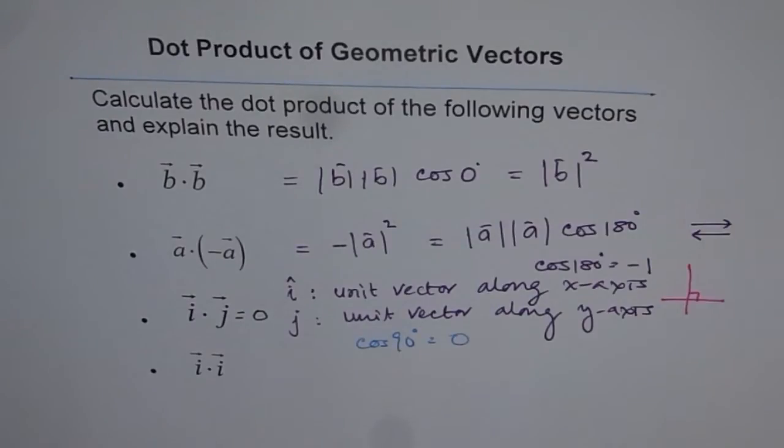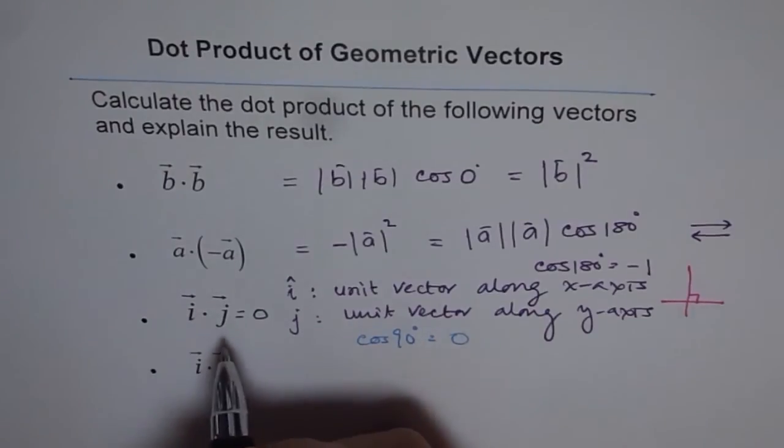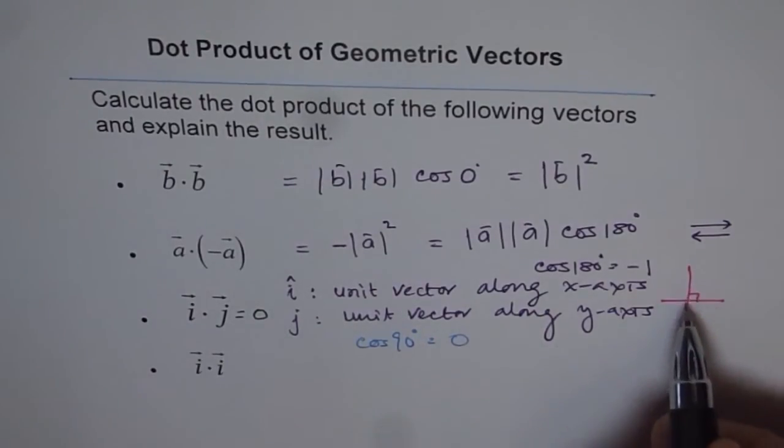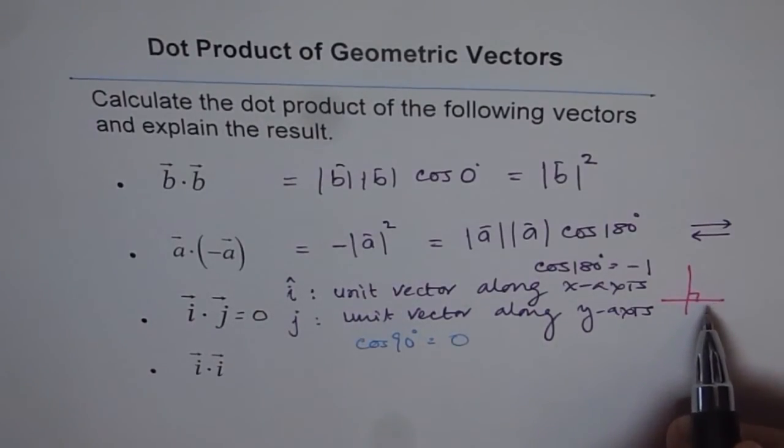So remember that. If they are perpendicular vectors, that means you will get 0 as your answer since the angle theta between them is 90 degrees.